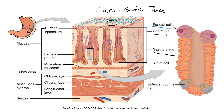As we move down into the gastric glands, the first cell type is the parietal cell. These cells are very large, they tend to stain red in standard histological preparations, and these are the cells that produce both the hydrochloric acid and a substance called intrinsic factor, which is necessary for the absorption of vitamin B12.